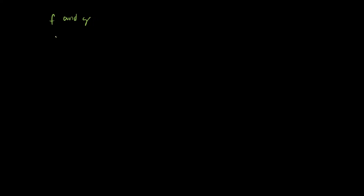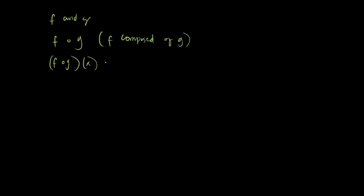This method of combining functions uses the output of one function as an input for a second function. In general, given functions f and g, the composite function is denoted by f composed of g — read as 'f composed of g.' The composite function is defined as: f composed of g of x is equal to f of g of x.